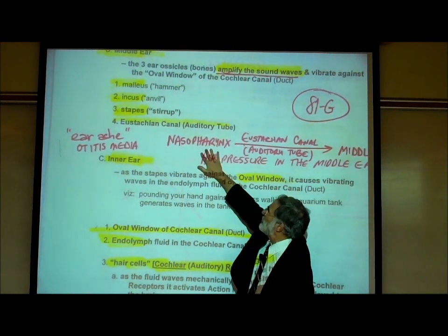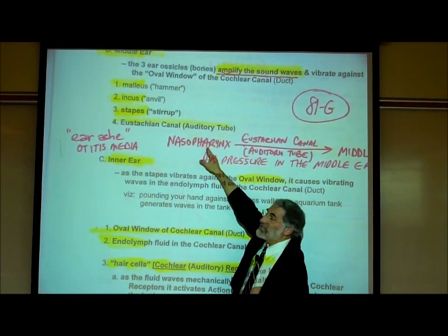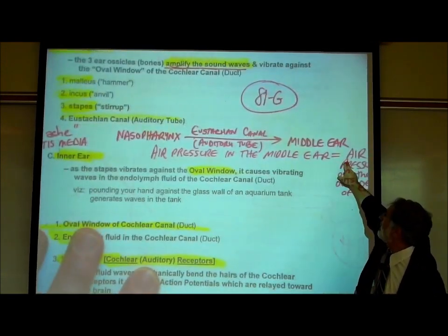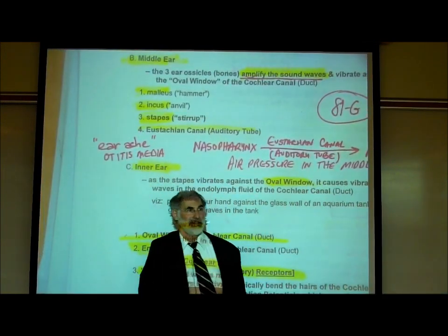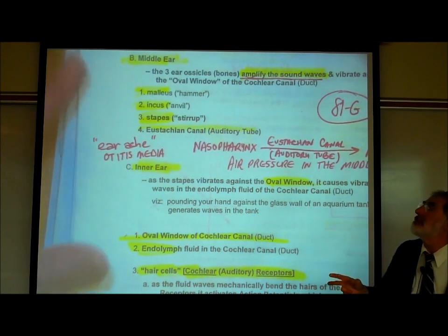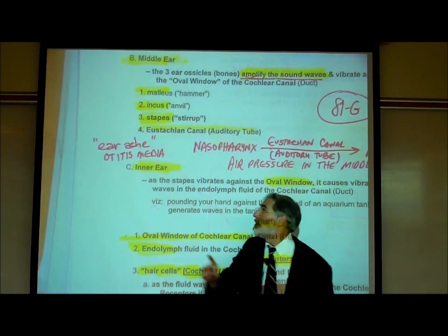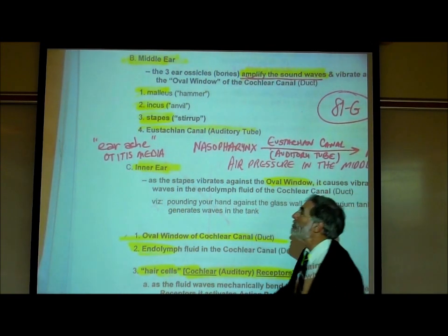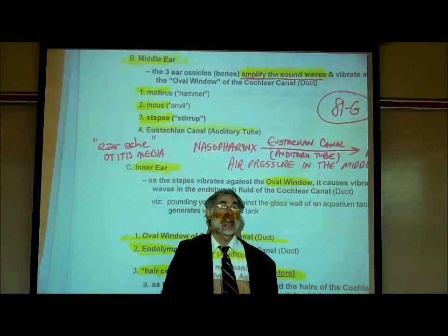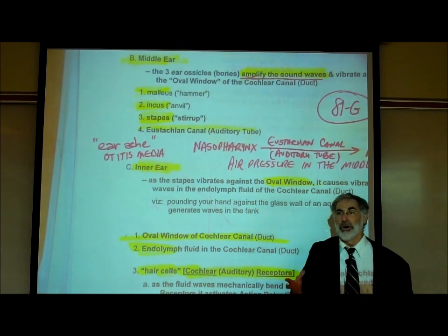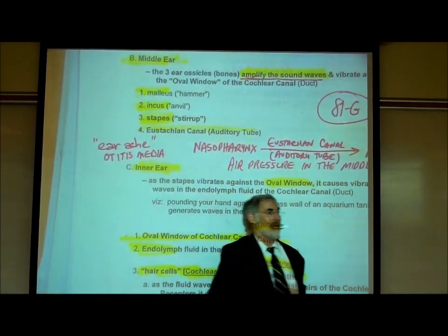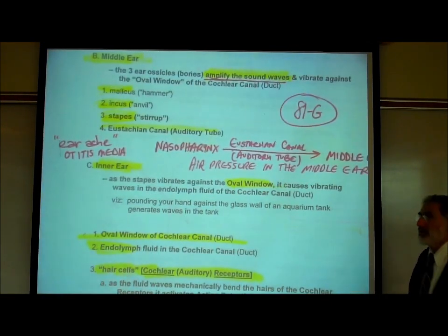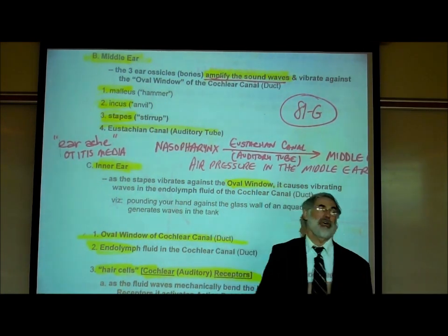The eustachian canals have another important clinical role. If you have a sore throat, this infection can spread up the eustachian canals into the middle ear. When that happens, that's called an earache — clinically called otitis media. Itis means infection, ot means ear, and media means middle. So otitis media means middle ear infection. How you end up with an earache is because the infection travels from your throat up the auditory tubes or eustachian canals into the middle ear.